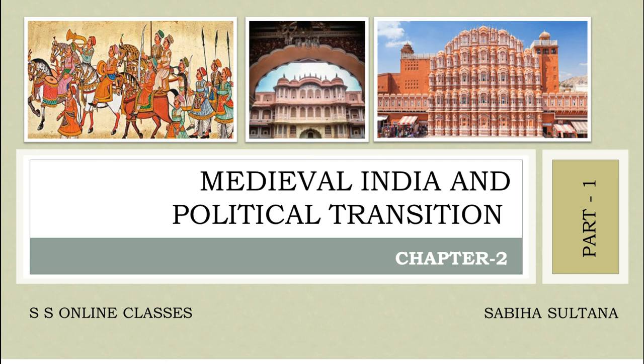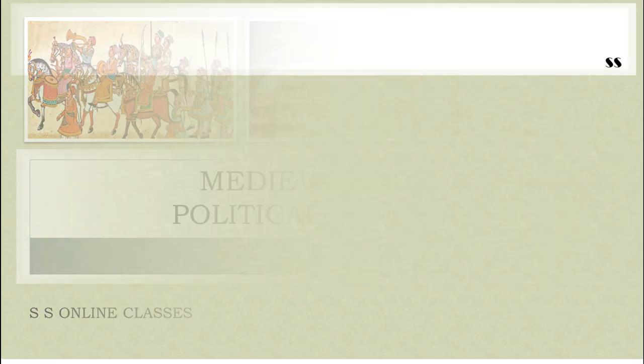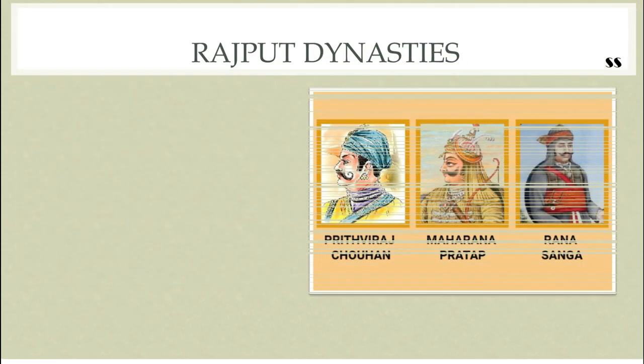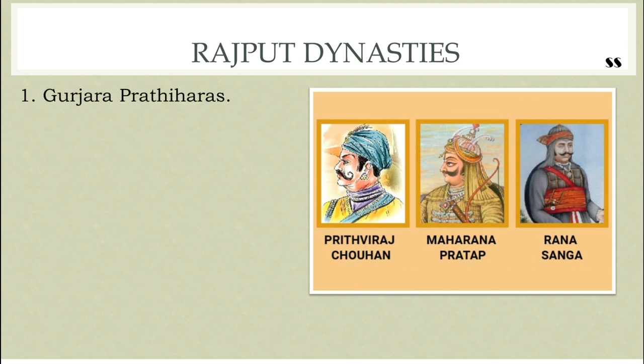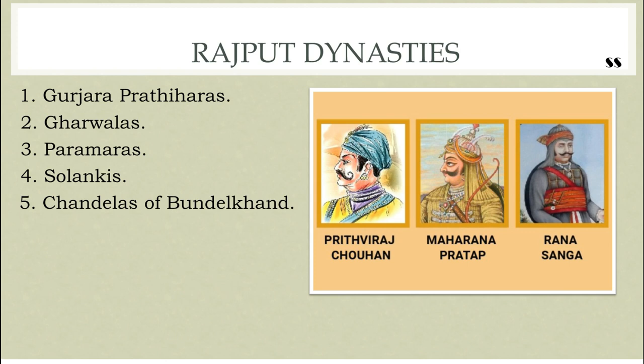After the rule of Vardhanas of Thaneshvara, most of western and northern India was ruled by Gurjara Pratiharas, Chandelas of Bundelkhand, Gharvals, Solankis, Paramars, and many other Rajput dynasties. By the end of the 12th century, Rajput kings like Prithviraj Chauhan, Jaichandra Gharval, and Paramaradeva Chandela were the most powerful kings of North India.